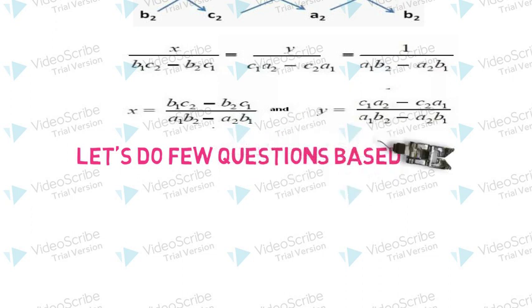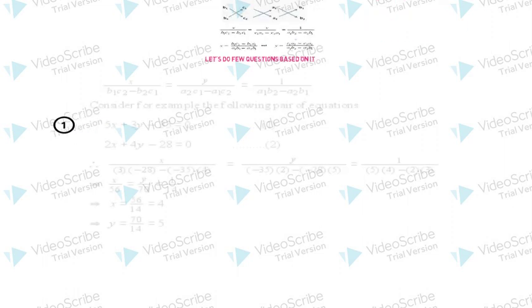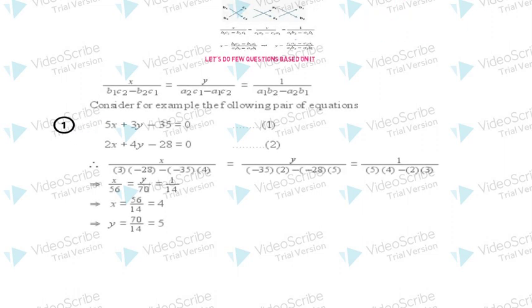Question number one: Here I have two equations. 5x + 3y - 35 = 0 and 2x + 4y - 28 = 0.